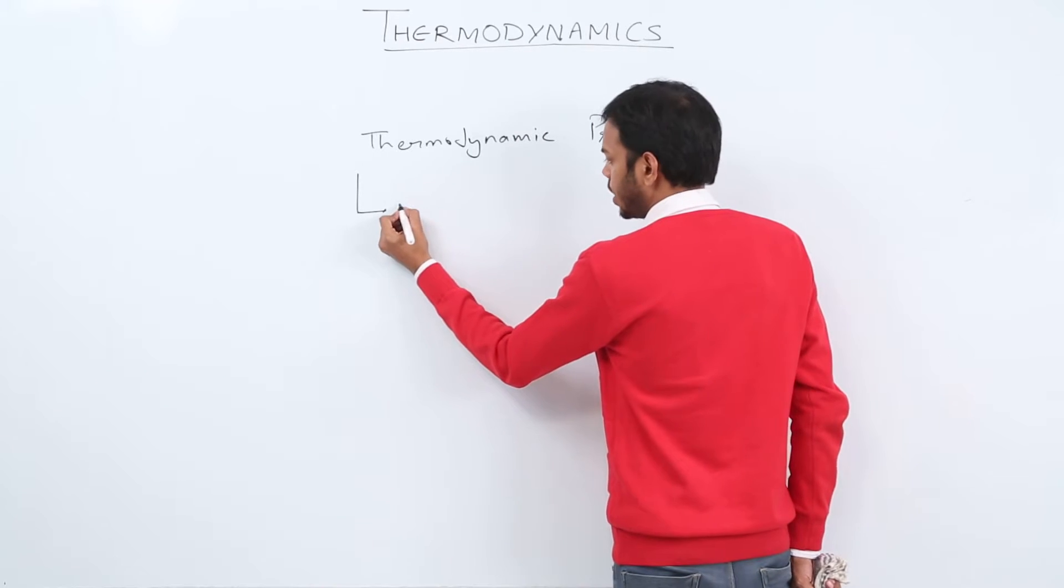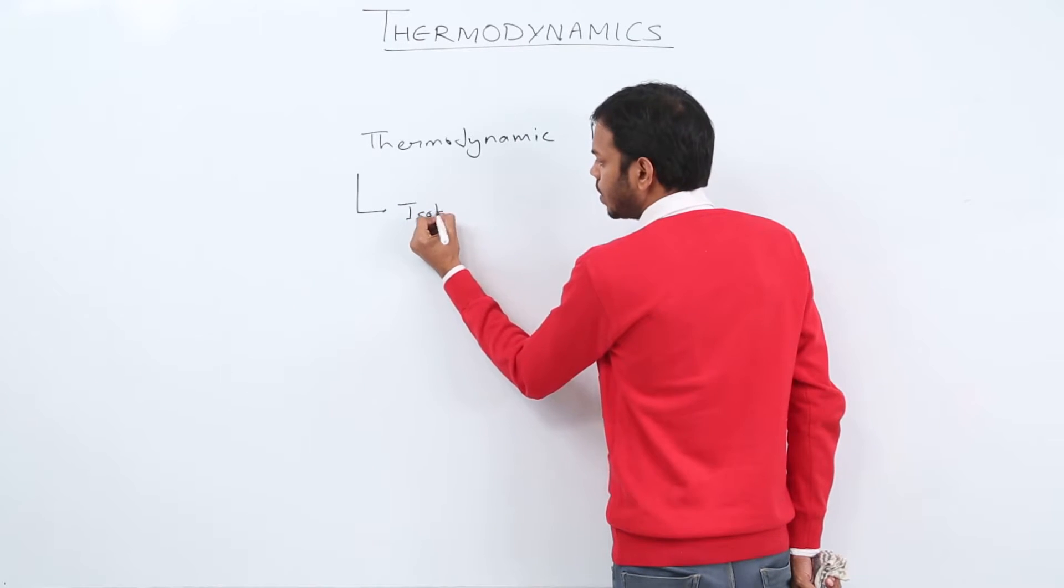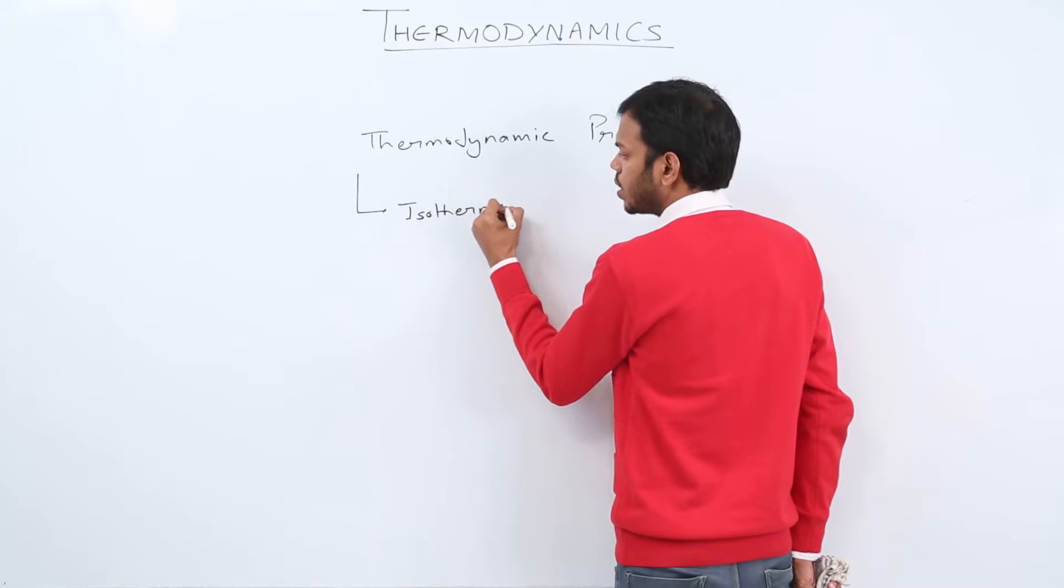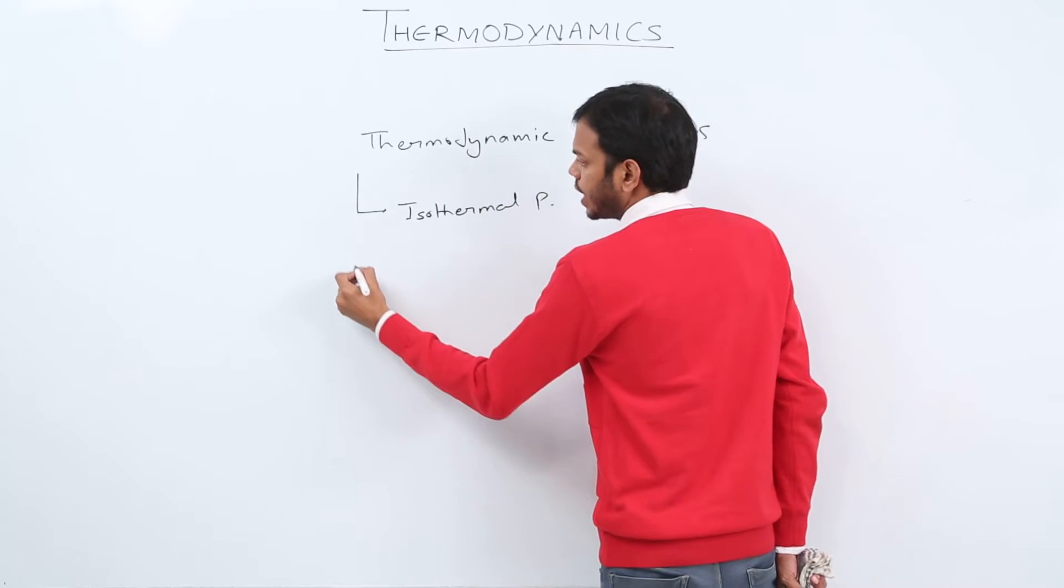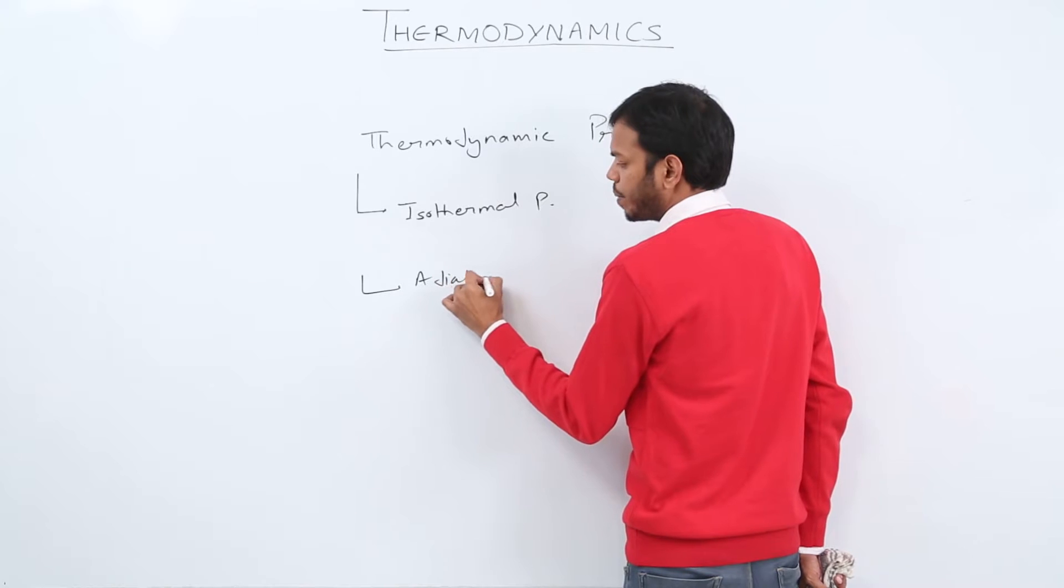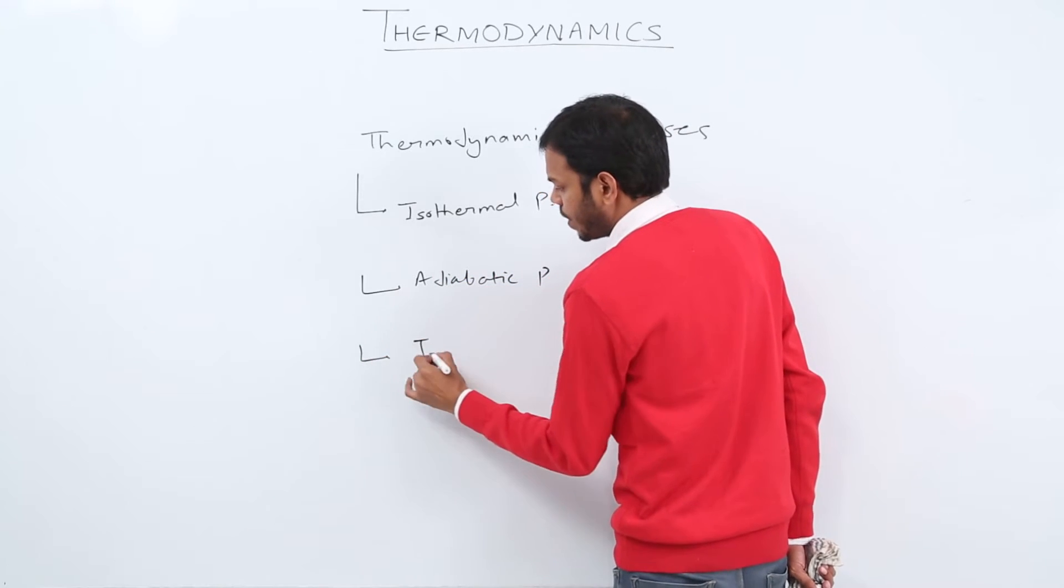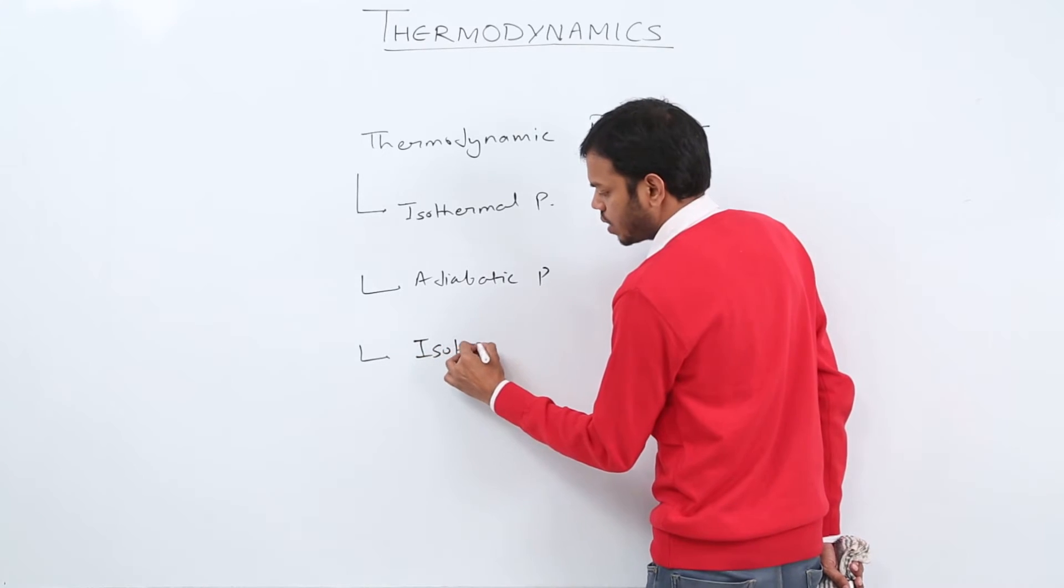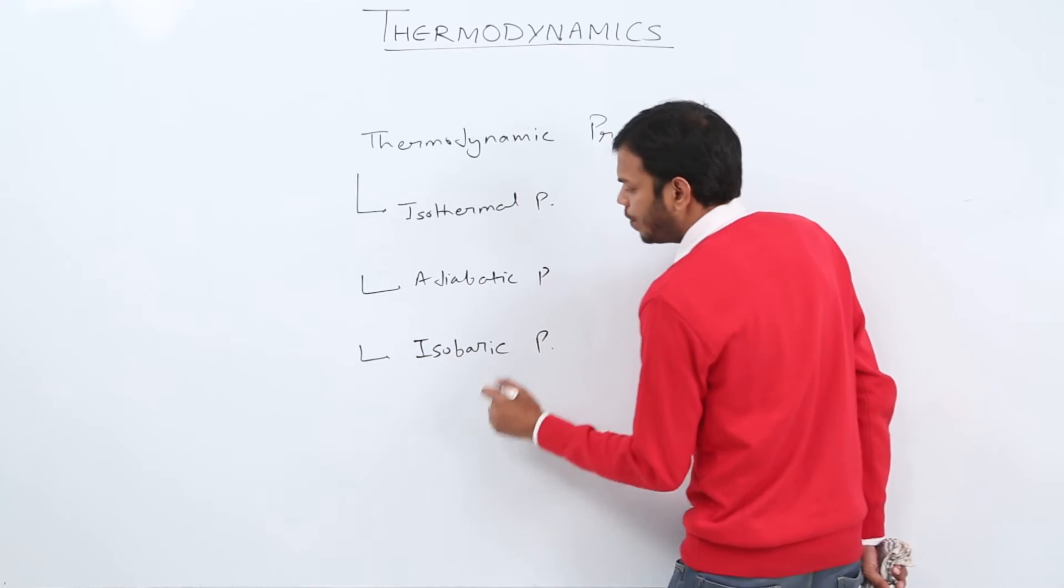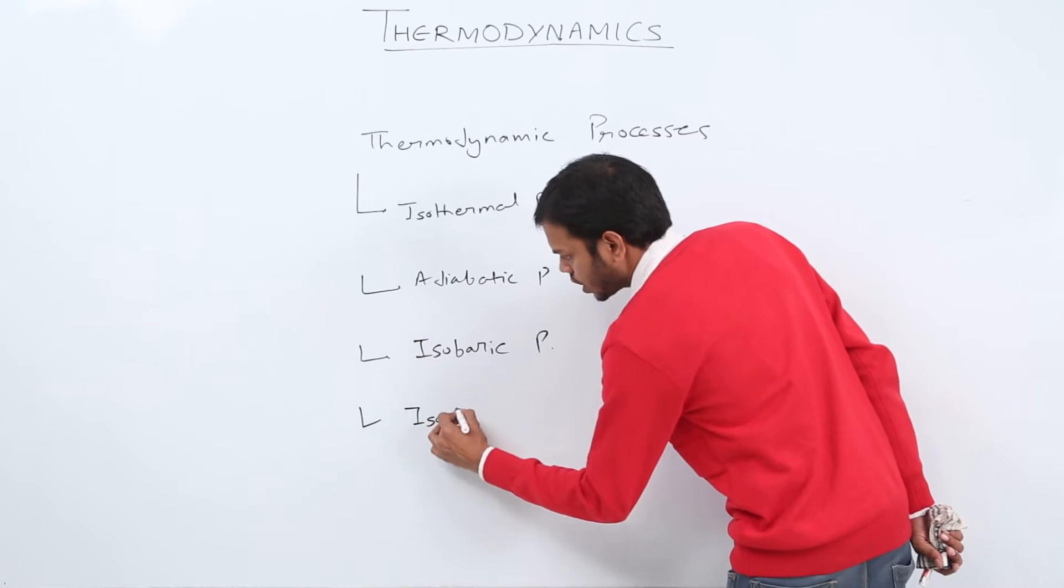First, isothermal process. Then, adiabatic process. Then we have isobaric process. And then we have isochoric process.